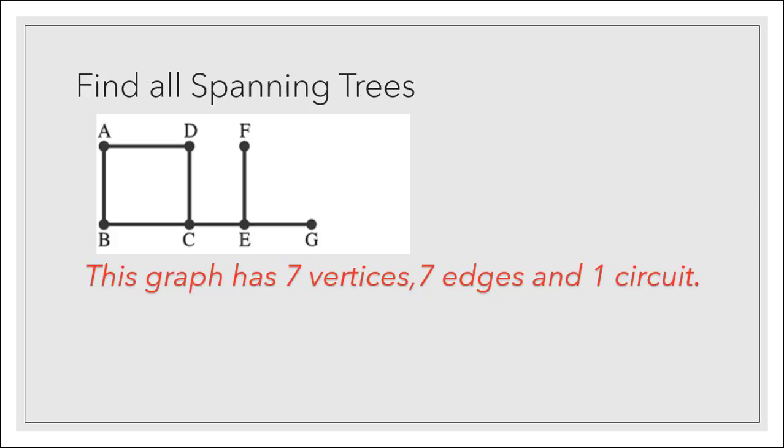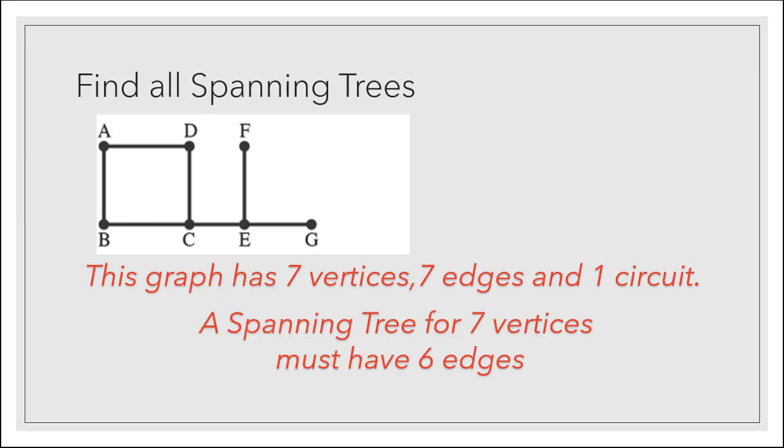Let's find all the spanning trees for this graph. This graph has seven vertices, seven edges, and just one circuit, that square. A spanning tree for a graph with seven vertices has to have six edges, not seven. So we know we're going to be removing one edge and we have to, by removing it, break that circuit. So removing one edge from that square will always produce a spanning tree.